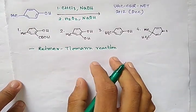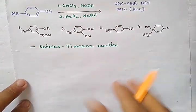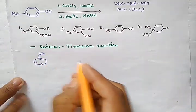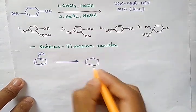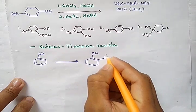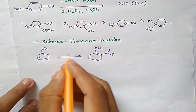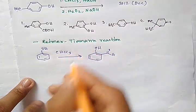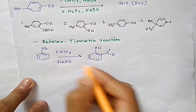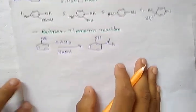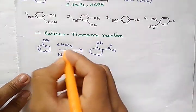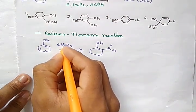The Reimer-Tiemann reaction is a reaction used for the conversion of phenol to salicylaldehyde, by treatment with chloroform in the presence of a strong base — basically sodium hydroxide or potassium hydroxide. Now let's look at the mechanism of the Reimer-Tiemann reaction, where chloroform plays a vital role.